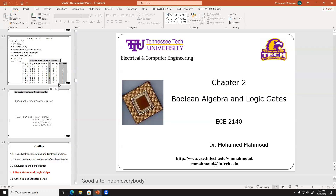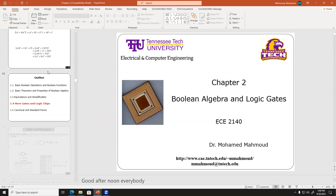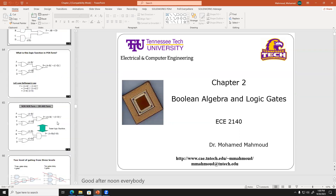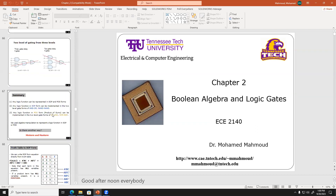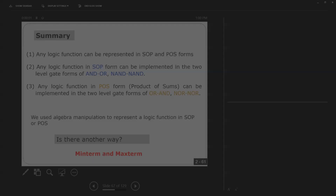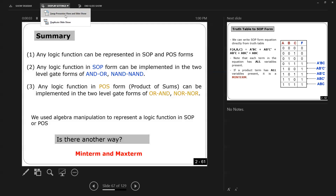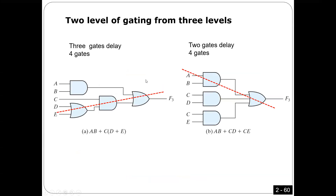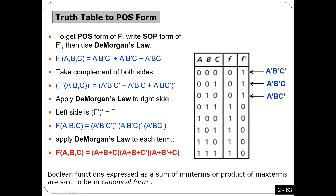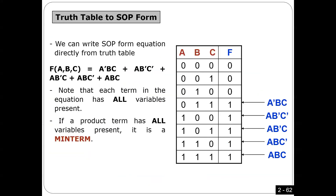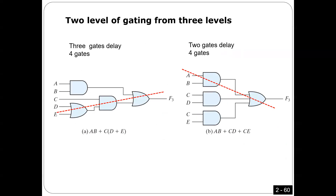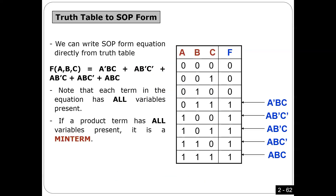What I explained last time: if you have a truth table, how can you compose, or how can you create the function out of this truth table? That's what I explained last time.